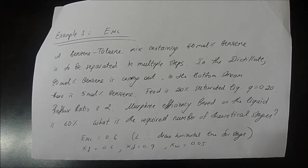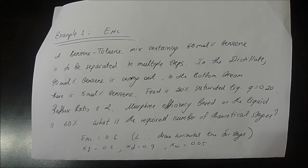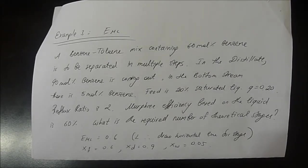The example is a benzene-toluene mix containing 60 mol percent benzene to be separated in multiple steps. In the distillate, 90 mol percent benzene is coming out. In the bottom stream, there is 5 mol percent benzene. Feed is 20% saturated liquid.